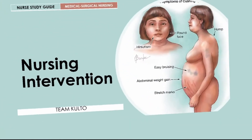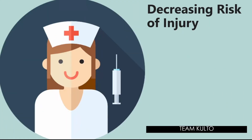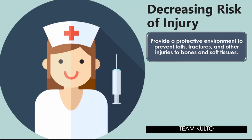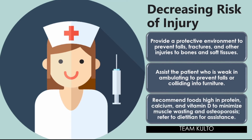What are the nursing interventions for Cushing's syndrome? In terms of decreasing risk of injury: provide a protective environment to prevent falls, fractures, and other injuries to bones and soft tissues. Assist the weak patient when ambulating to prevent falls or collisions with furniture. Recommend foods high in protein, calcium, and vitamin D to minimize muscle wasting and osteoporosis, or provide a referral to a dietician for assistance.